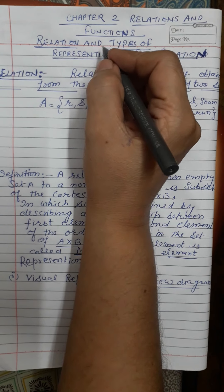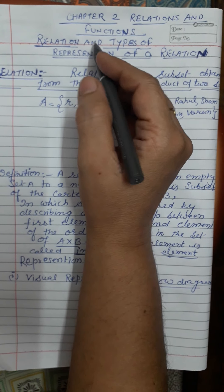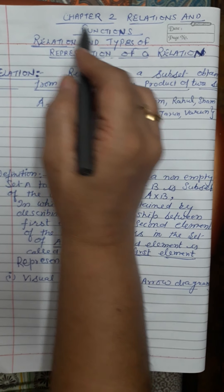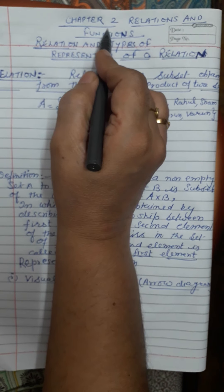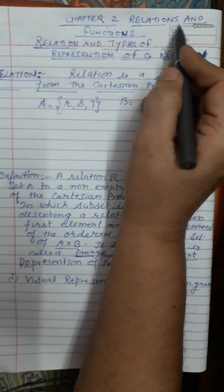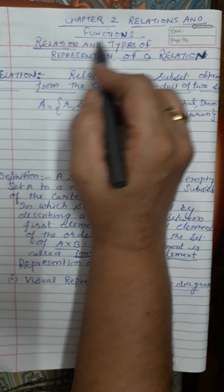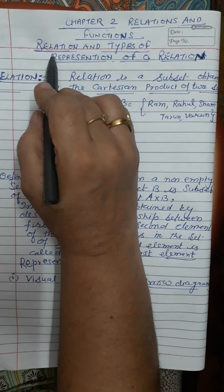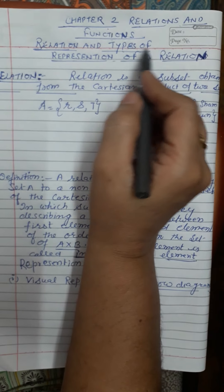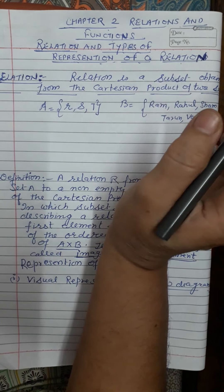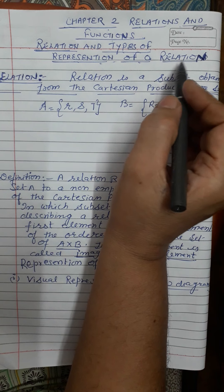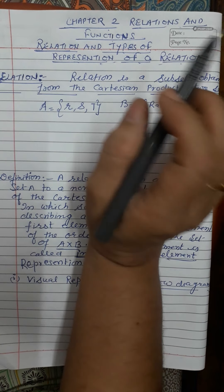Welcome everyone. Today our topic is Chapter 2: Relations and Functions — Relation and Types of Representation of a Relation.